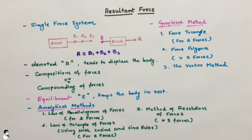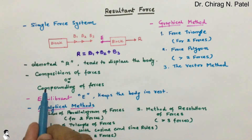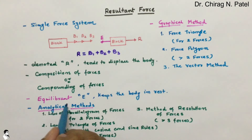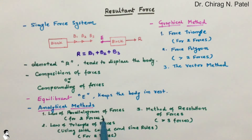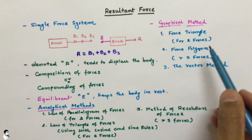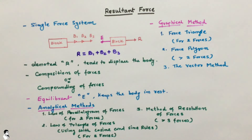To summarize, to find the resultant of a given force system, we need to understand the definition of resultant force, composition of forces, compounding of forces, and equilibrium. To find the resultant, analytical methods include the law of parallelogram of forces, law of triangle of forces, and method of resolution of forces. Graphical methods include force triangle, force polygon, and the vector method. This is all about resultant force.